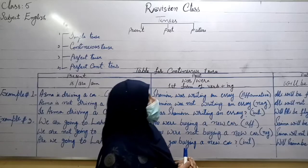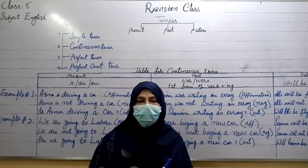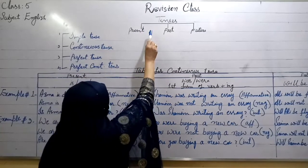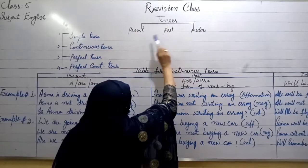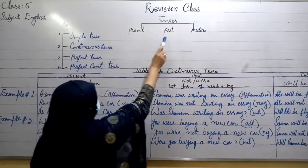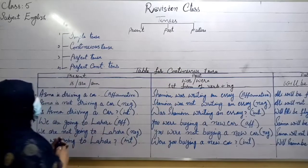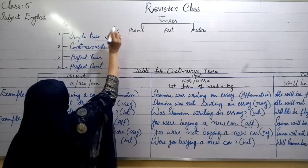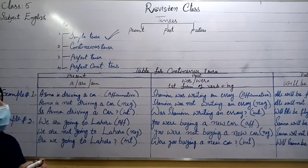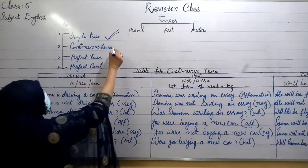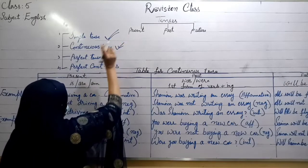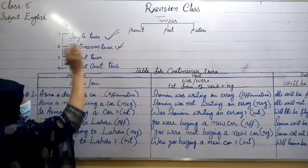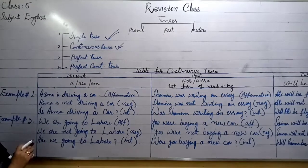In today's class, I will revise the remaining tenses of the grammar portion. In the previous class, I told you there are three basic main parts of tense: present, past, and future. I taught you simple tense. And in today's class, I am going to revise continuous tense. Which tense will you revise? Continuous tense.